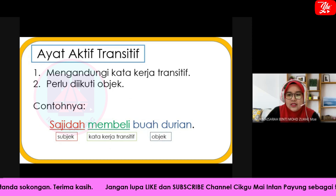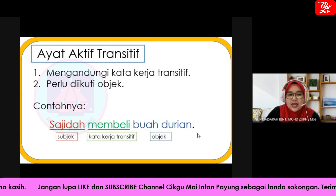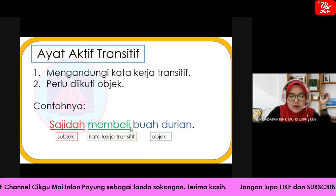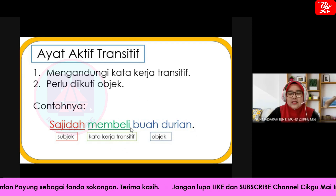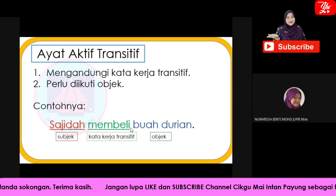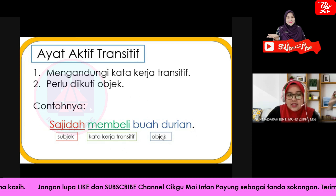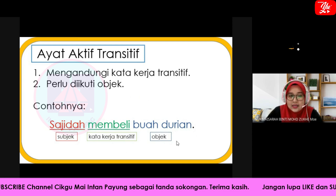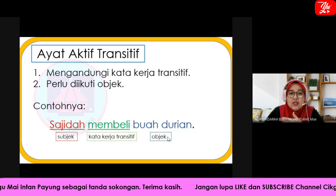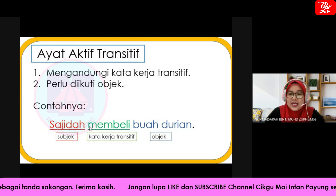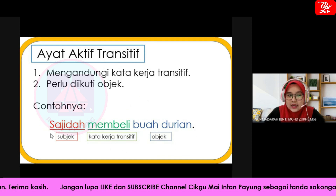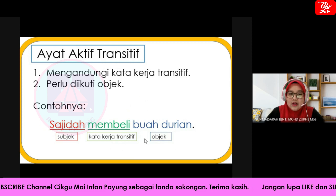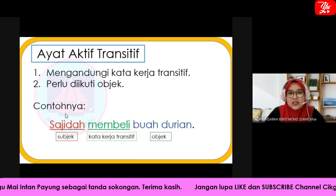Ayat aktif transitif memang kena ada objek di bahagian belakang. Kalau tak ada buah-buahan, hanya 'Sanjidah membeli' — kita pun tertanya-tanya, Sanjidah beli apa? Sebab tu ayat aktif transitif mesti ada objek di belakang. Kalau tak ada objek, orang yang mendengar ayat tu akan tertanya-tanya. Ayat aktif transitif ada subjek, ada kata kerja, dan ada objek — dia tak boleh tak ada objek.